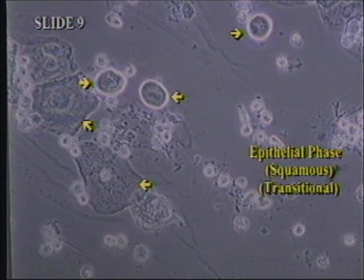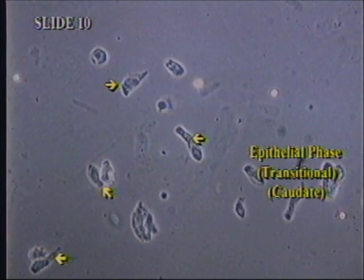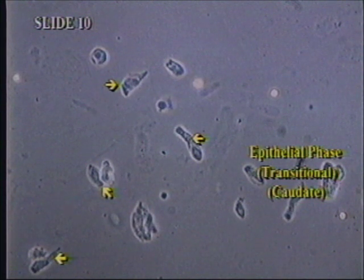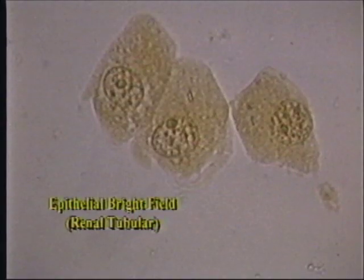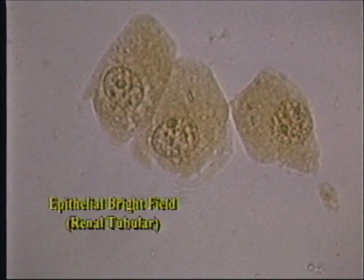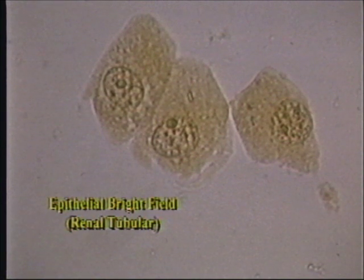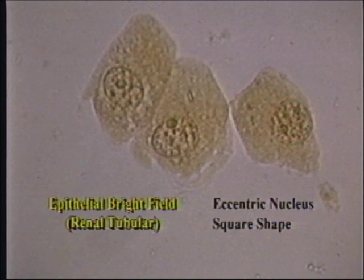This phase view shows squamous and transitional epithelial cells in combination — the large squamous epithelial cells and the transitional epithelial cells, which are round, significantly smaller, with a centrally placed nucleus. Another type of transitional epithelial cell are these caudate-shaped cells seen under phase; they have the same significance as other transitional cells but come from a different part of the urinary tract. The third type to be differentiated is the renal tubular cell. These cells are pretty much the same size as transitional cells but have an eccentric, obvious nucleus and a square rather than round shape.